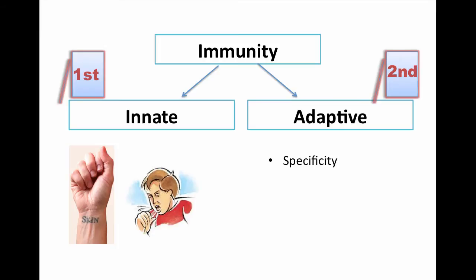However, the adaptive immunity is very specific to a certain antigen. It has self and non-self recognition meaning it recognizes if the tissue is part of your own body as self tissue or exogenous non-self tissue. It also has a memory.